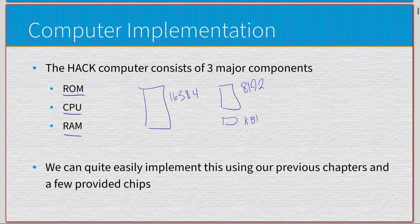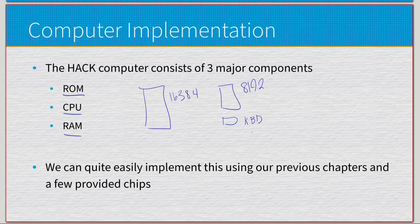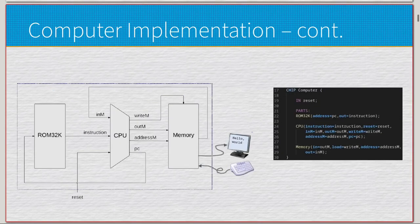Along with the final keyboard register, which is just one. You can quite easily implement all of this using the previous chapters and a few provided chips. Some of the things we're going to see, you don't make — they're provided by Nand2Tetris. I'll point out which ones those are; it's maybe like four or five.